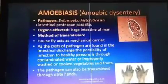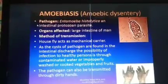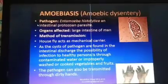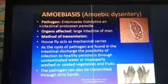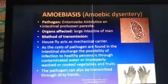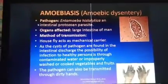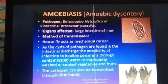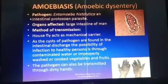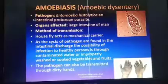The method of transmission is the housefly, which acts as a mechanical carrier. Houseflies sit on excreta and waste, picking up germs, and then sit on our food and transmit those germs using their legs and mouthparts. This contaminates the food, and if we eat contaminated food or drink contaminated water, or consume improperly washed or cooked vegetables and fruits, we can get infected.